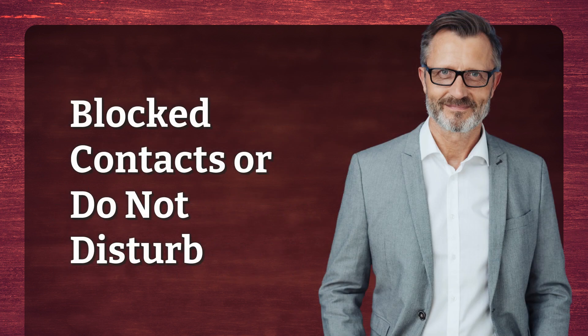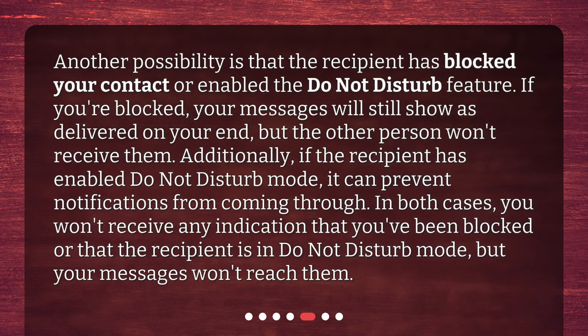Blocked contacts or Do Not Disturb: another possibility is that the recipient has blocked your contact or enabled the Do Not Disturb feature. If you're blocked, your messages will still show as delivered on your end, but the other person won't receive them. Additionally, if the recipient has enabled Do Not Disturb mode, it can prevent notifications from coming through. In both cases, you won't receive any indication that you've been blocked or that the recipient is in Do Not Disturb mode, but your messages won't reach them.